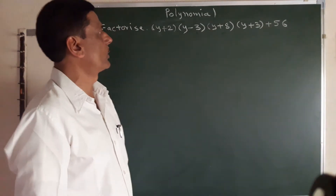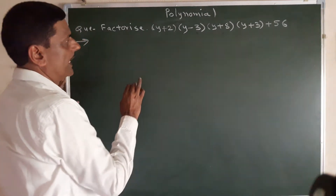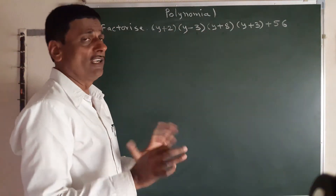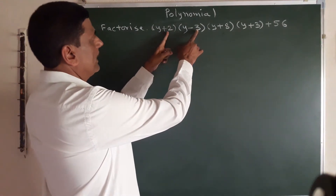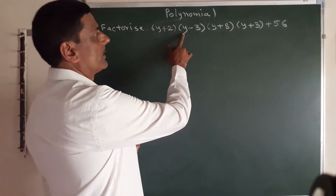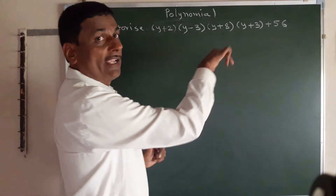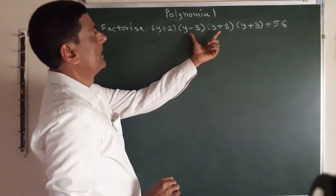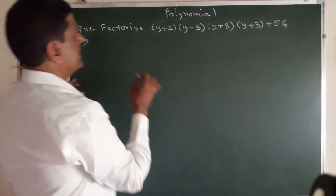We can factorize this by adjusting two terms such that the first term is y squared and the second term is common. Suppose the second term: for (y-3)(y+2) the middle term is minus y, and for (y+8)(y+3) the middle term is 11y — those are not common. So we take pairs such that both give a common middle term.